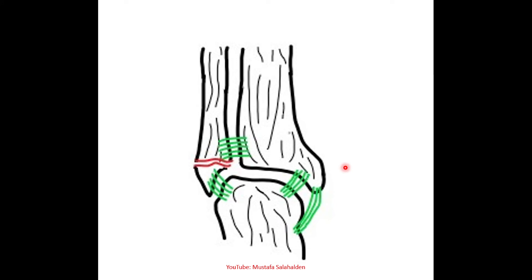This drawing explains Grade A. We have the fracture in the fibula — the lateral malleolus — below the level of the syndesmosis. The syndesmosis is intact, the deltoid ligament is intact, the tibiofibular ligament is intact, and the medial malleolus is intact. However, in some cases the medial malleolus may be fractured, as shown here. So in Grade A there is a fibular fracture below the level of the syndesmosis, with an occasional medial malleolus fracture.